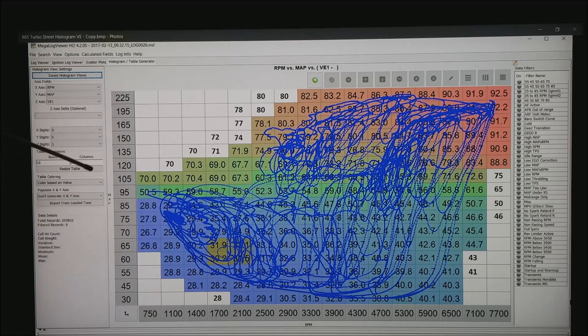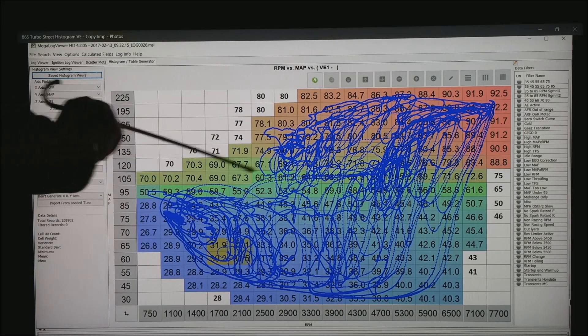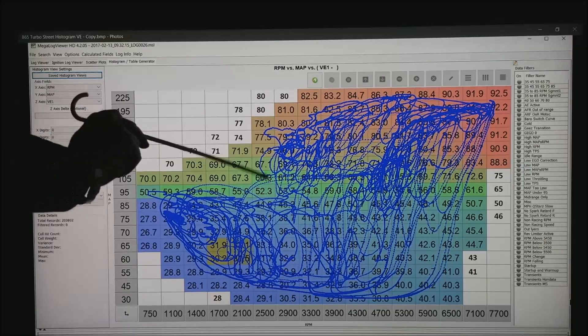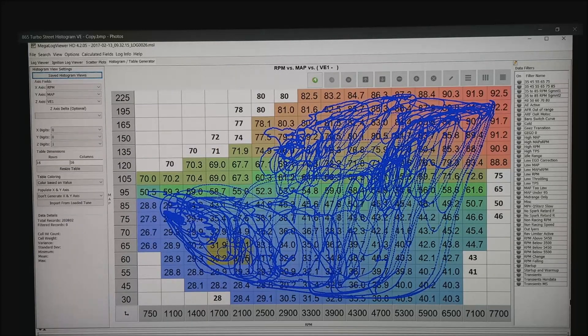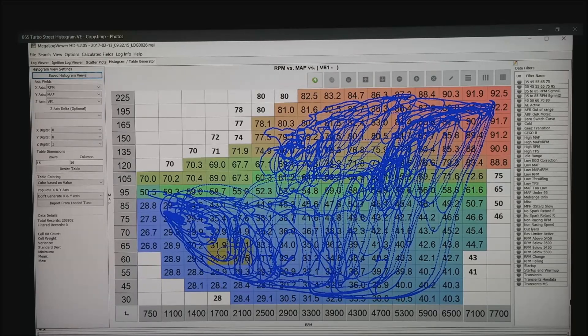The other thing to notice is this motor at the 100 kPa line which is right here. Notice this VEs are running about 50 to 60 all through here.